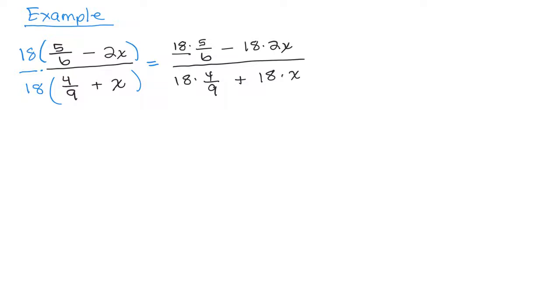So if you want, you can write 18 over 1, that's up to you, or you could just leave it as a whole number. And then, since we multiply by the least common multiple of these fractions, 5/6 and 4/9, you'll definitely be able to cancel.